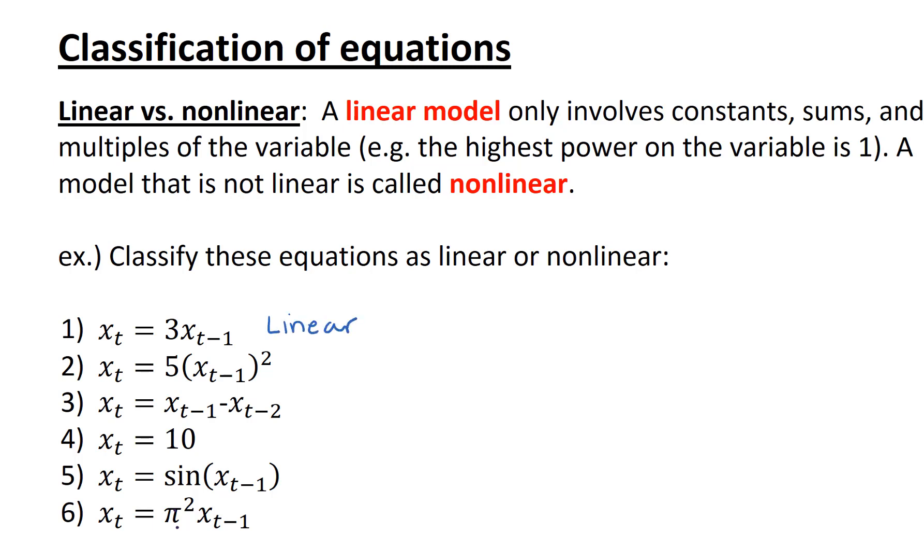In the next equation, we've got x sub t equals 5 times x sub t minus 1 squared. Since we have this exponent of 2 on the variable x, this is a nonlinear model.